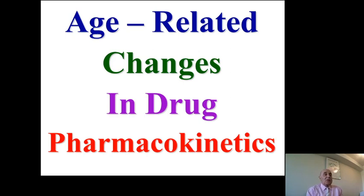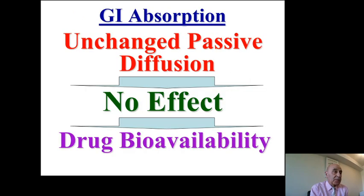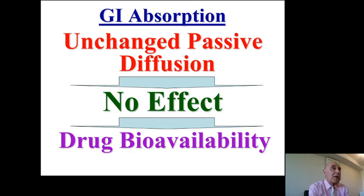Now let's talk about age-related changes in drug pharmacokinetics — absorption, metabolism, and elimination of medications. Starting with drug absorption: passive diffusion for absorption of medication in the elderly is not affected, and therefore drug bioavailability will not be affected for drugs absorbed by passive diffusion.